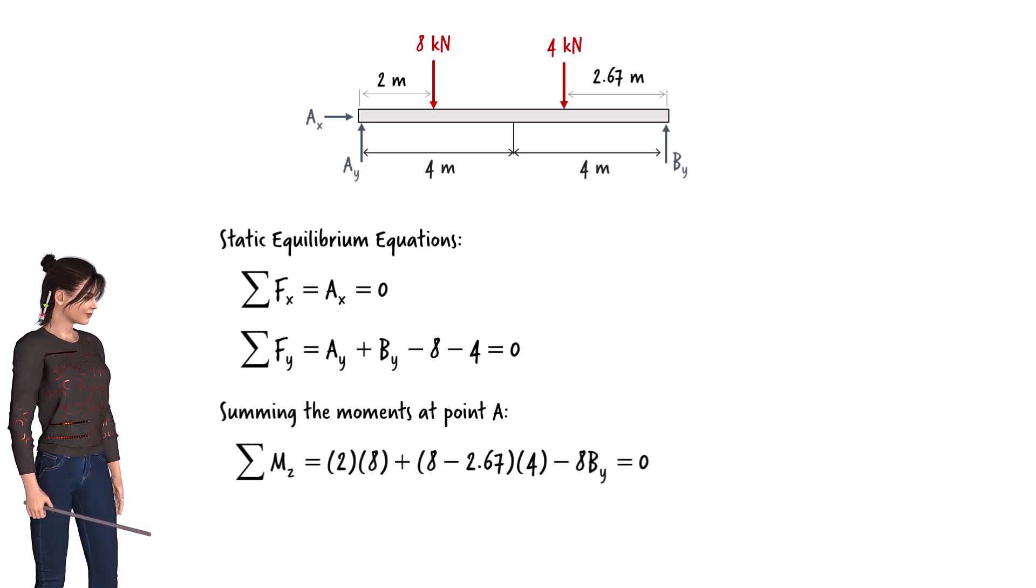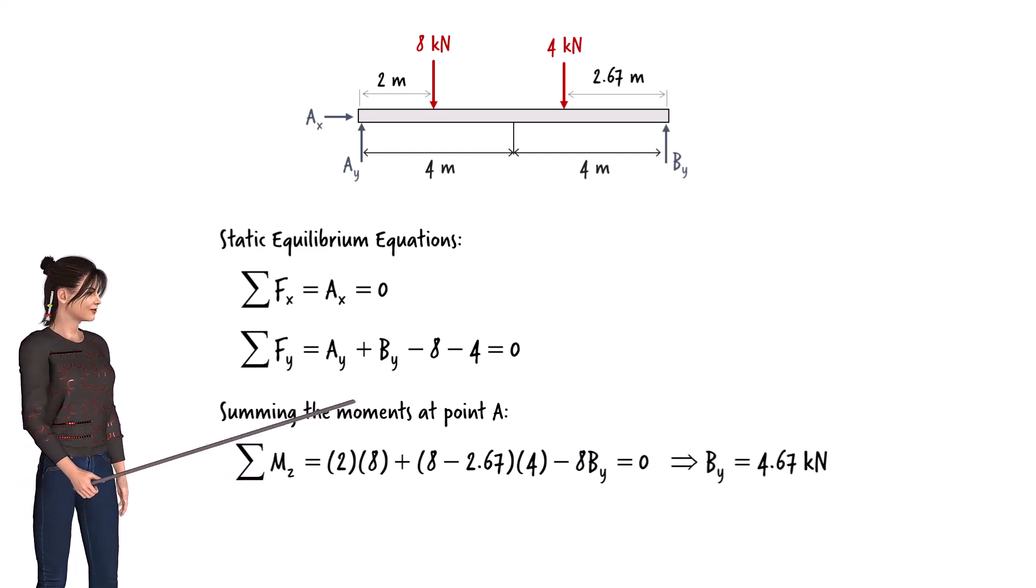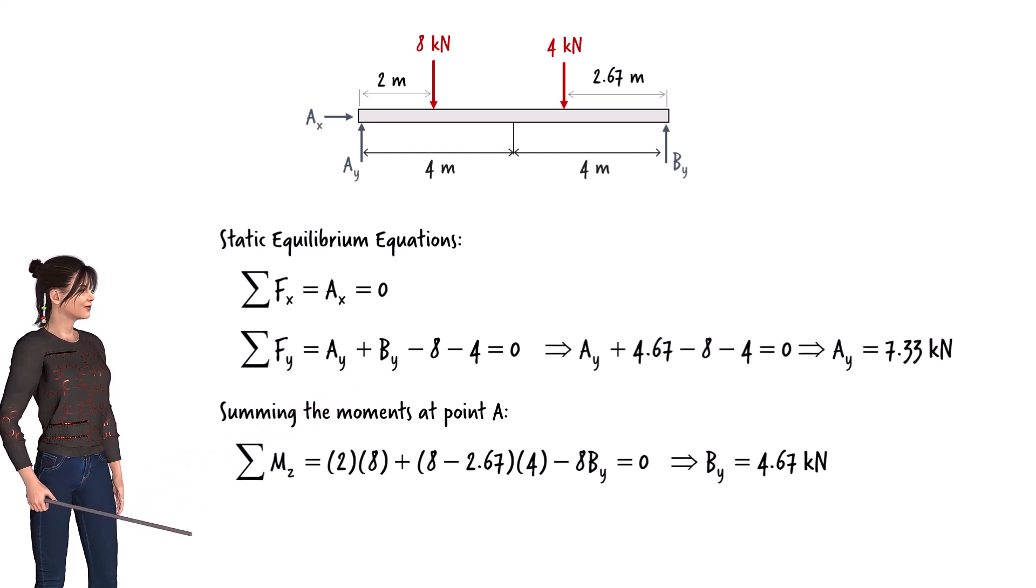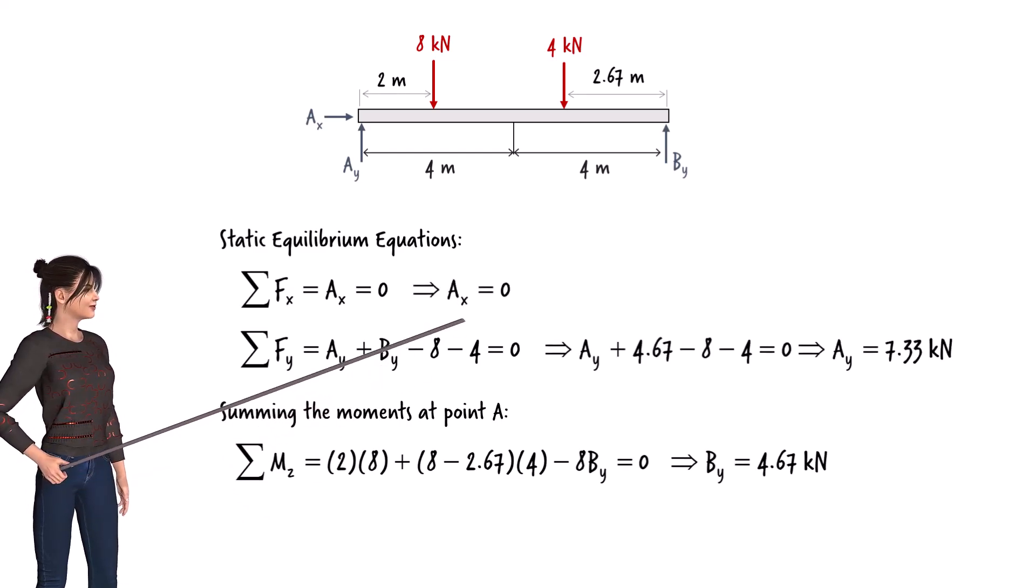We can use the moment equation to determine By, and use the second equilibrium equation to determine Ay. For this beam, Ax equals 0.